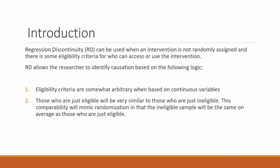Regression discontinuity can be used when an intervention is not randomly assigned, but there is some eligibility criteria for who can access or use the intervention. It's a method we can use when there is some program or policy implemented and there is some eligibility criteria that determines who can gain access to that program or who is affected by that policy.